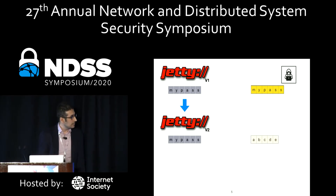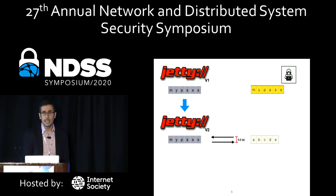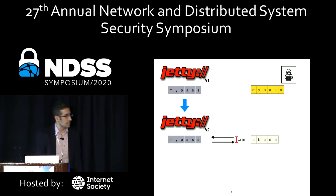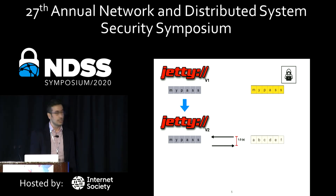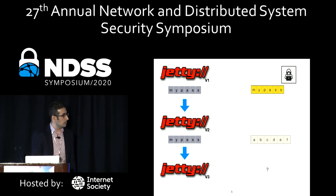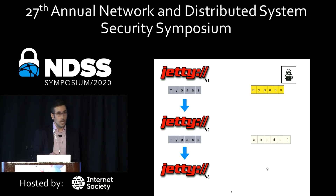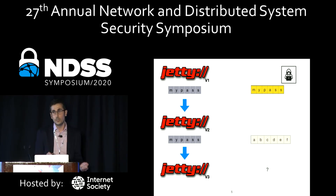But it turned out that variant 2 is still vulnerable. In this case, it is leaking the length of the secret. Whenever the length of the secret and a query match, it takes slightly more time than otherwise. Fortunately, developers noticed this problem and gave another fix that I call JETI variant 3. So now the question is: how can we find out whether this variant is secure against timing side channel or not?